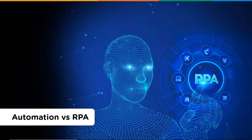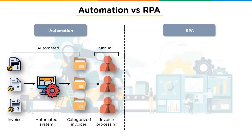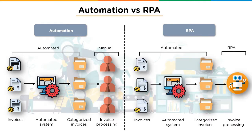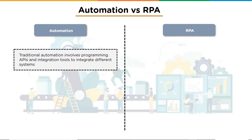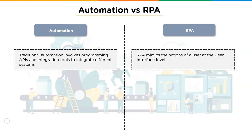Robotic process automation would be completely automating the working of a calculator, requiring zero human interaction. Consider an invoice processing software — it automatically generates invoices, but processing still requires human interaction. RPA ensures complete end-to-end automation and is an approach that allows one to automate the manual interactions in a known process.